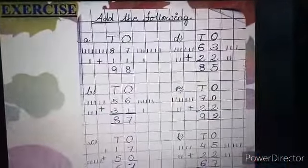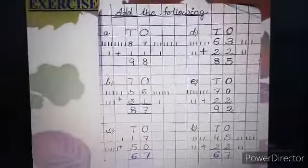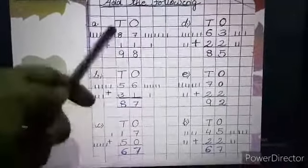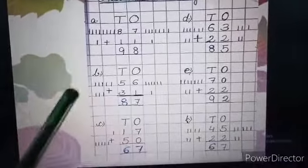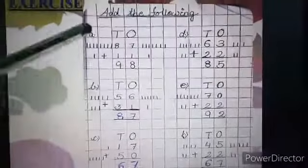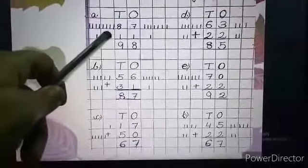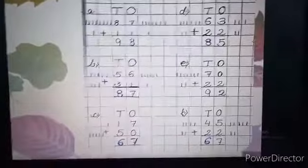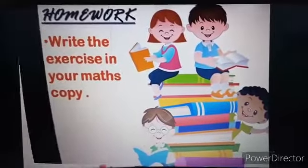See children. Here is the exercise. Add the following. Here 6 questions I have given. And also I have solved the questions also by drawing lines. So your work is to write this exercise in your copy. The exact thing you have to do by drawing lines as I have done. Now your homework is to write the exercise in your maths copy.